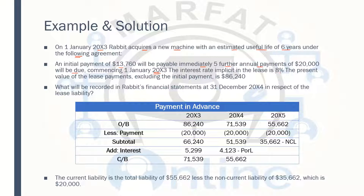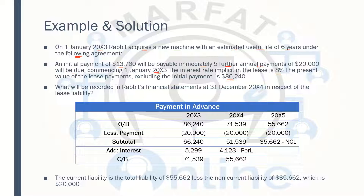The interest rate implicit is 8%, which is used for the interest calculation. The present value of the lease payments, excluding the initial payment, is $86,240 — we are not taking the initial payment because it's not a liability; you have already paid that. So starting from $86,240, first you deduct the payment — it's in advance — then you get the subtotal, then apply the interest on the subtotal, and then you get the closing balance.